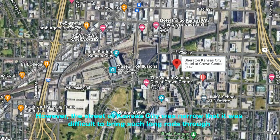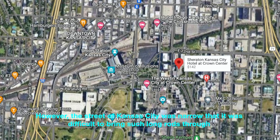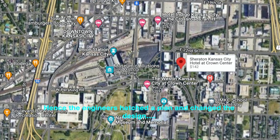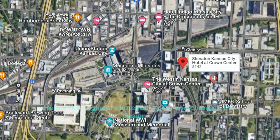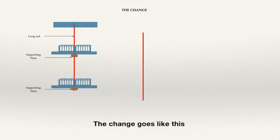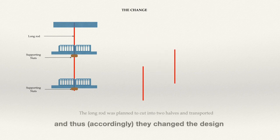However, the streets of Kansas City were narrow and it was difficult to bring such long rods through. Hence, the engineers hatched a plan and changed the design. The change goes like this. They split the rods into two halves so that the transportation would be made easier. And thus they changed the design.